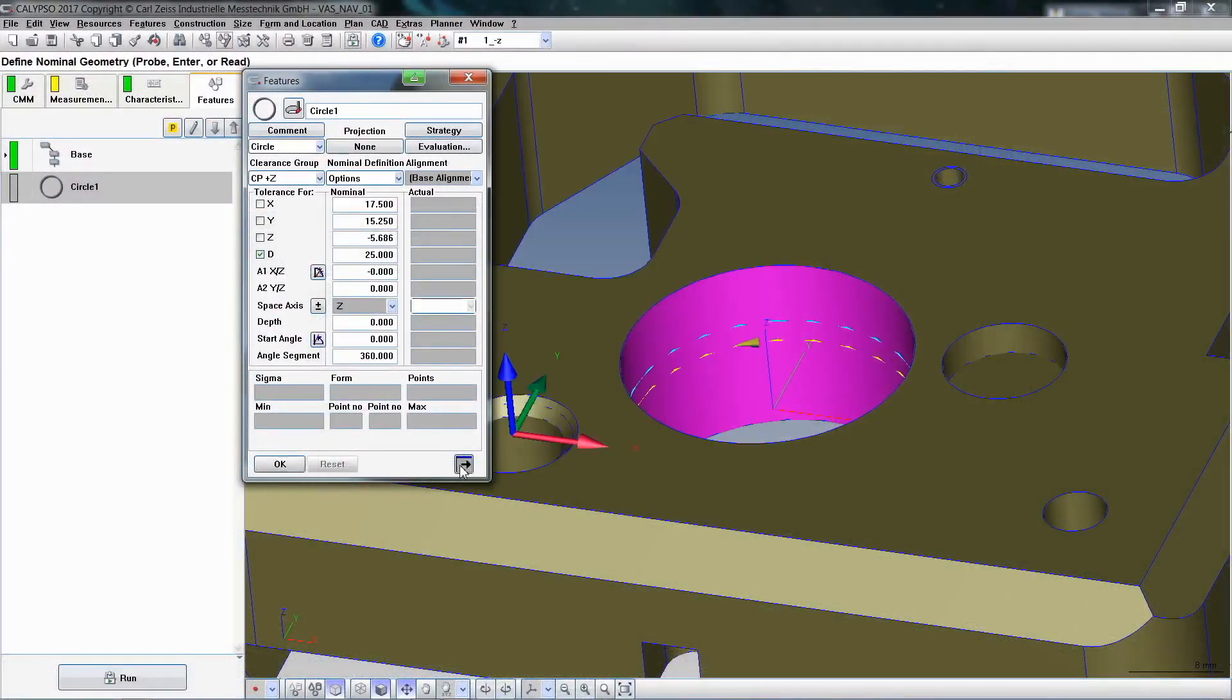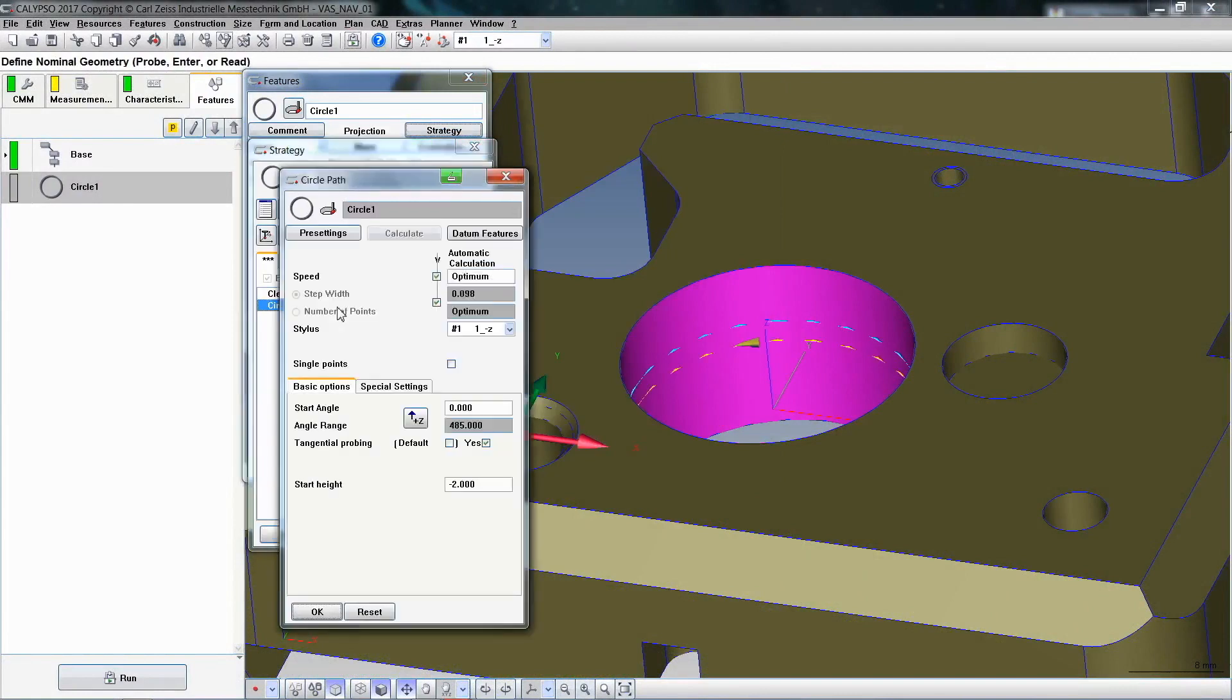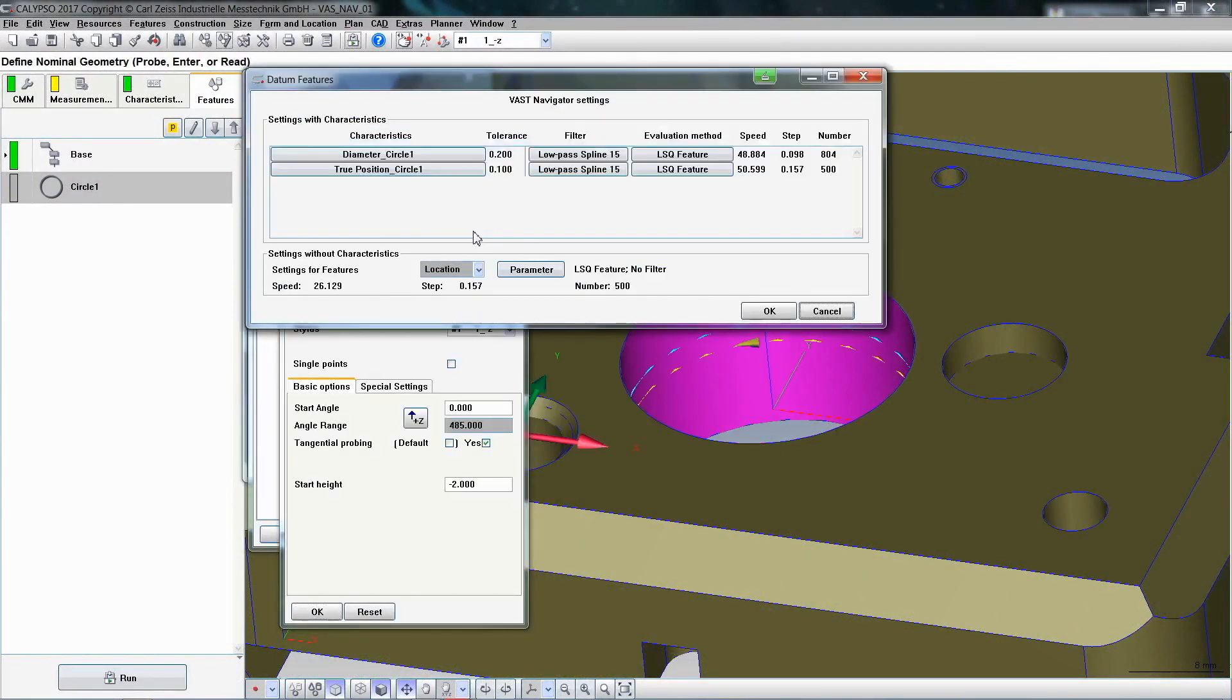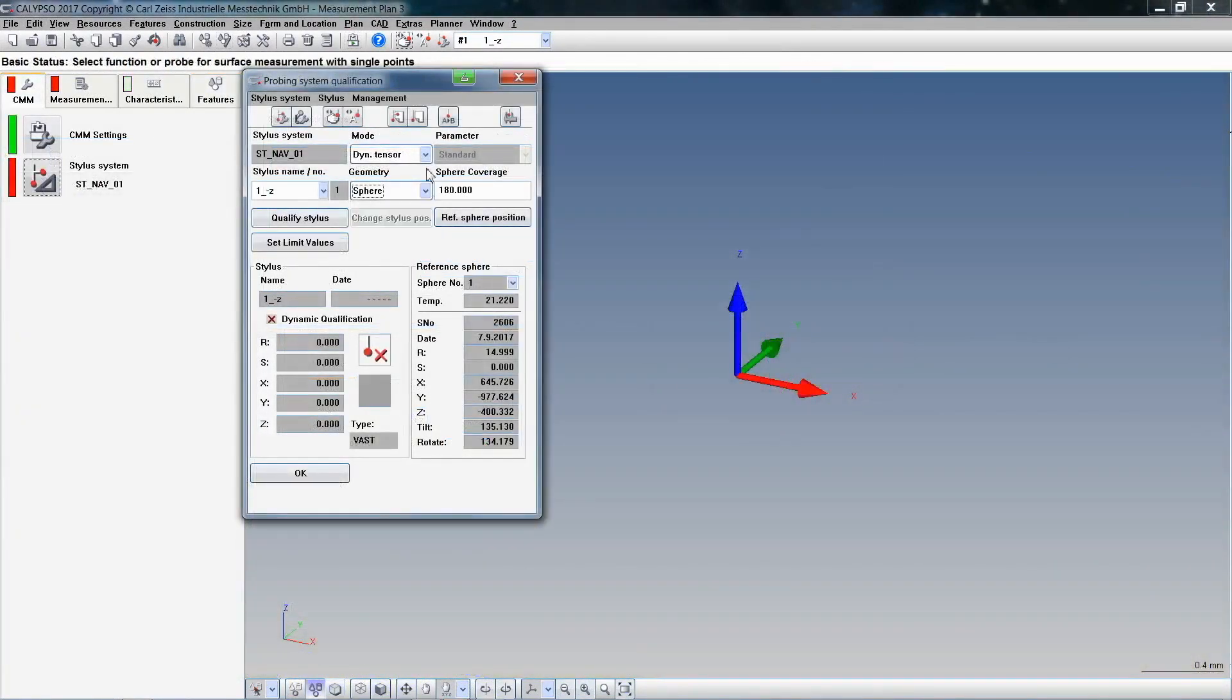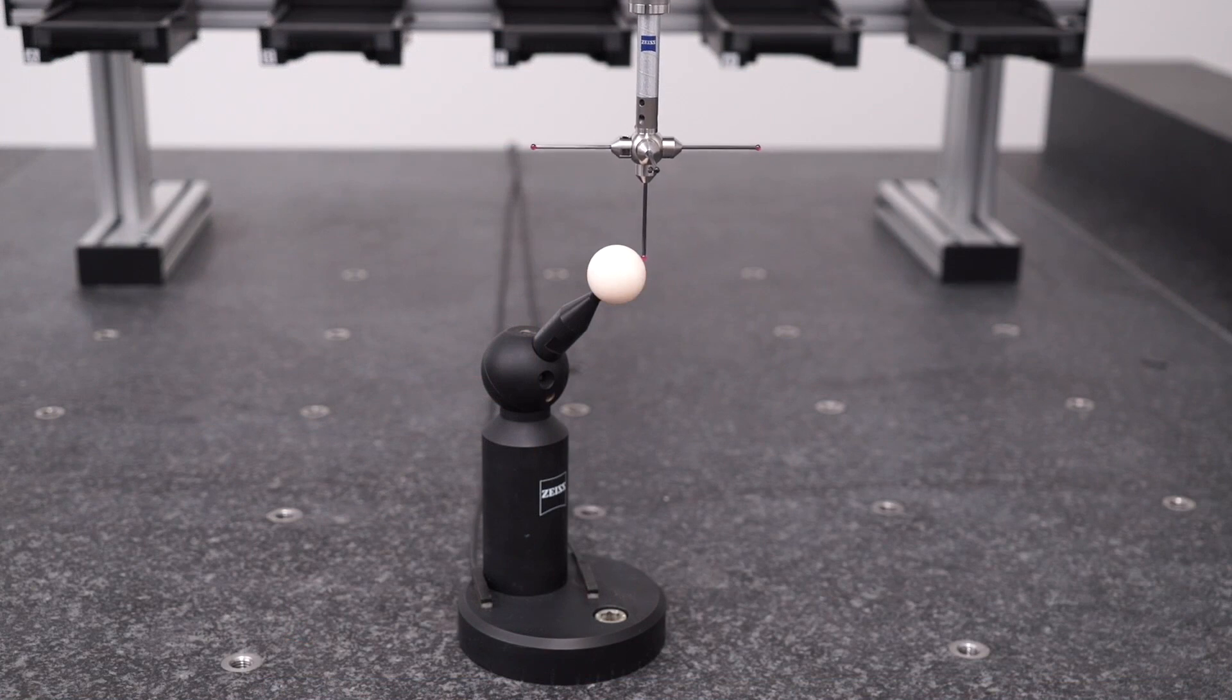The first chapter will introduce you to the VAST navigator, using the navigator while creating the program and for preparations, if necessary, for the use of the intelligent wizards for the optimal calculation of scanning speeds and number of points.